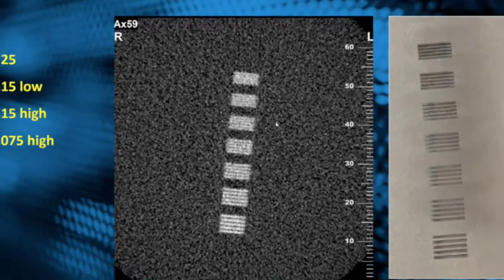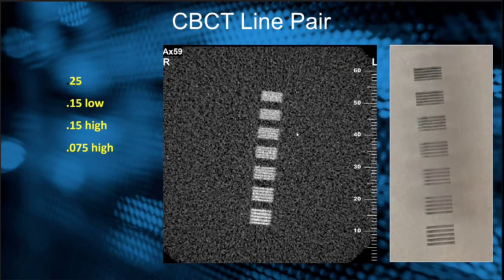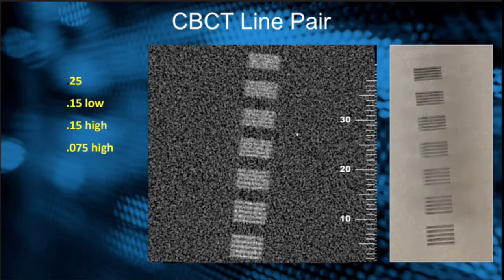This is giving us information about the resolution that we're able to capture on our particular x-ray machine. And at the highest setting that I have on my machine, 0.075, we get the best separation. So a line pair test is a really good way to use for your machine to see what the difference is on the scan.